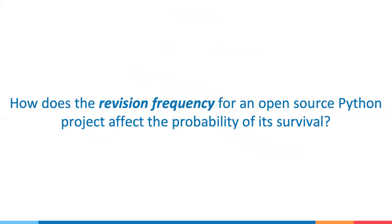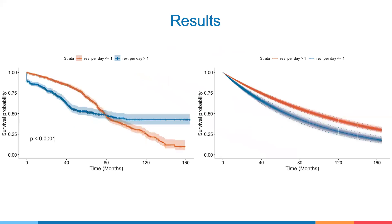Our second research question: How does the revision frequency for an open source Python project affect the probability of its survival? To answer this, we performed the same analysis and divided the projects into those that had revision frequencies above and below one revision per day. This attribute had a less significant impact on survival probability when compared to the original set of attributes, although useful inferences can still be drawn. For example, we can see in the Kaplan-Meier curve on the left of the screen that around the 60-month mark, the strata with revisions greater than one per day plateaus. While we are unsure of the exact reason for this, it might mean that more consistent, smaller revisions lead to a more healthy project in the long run.